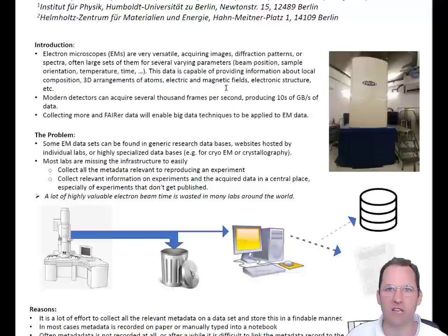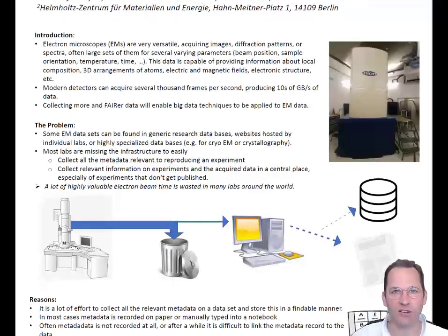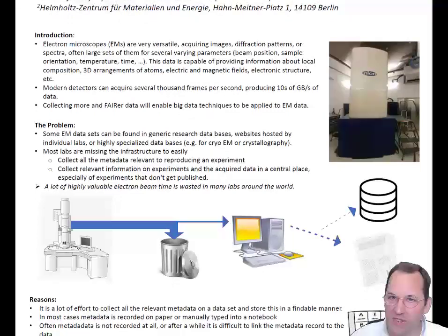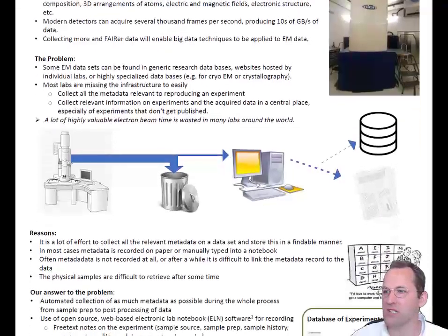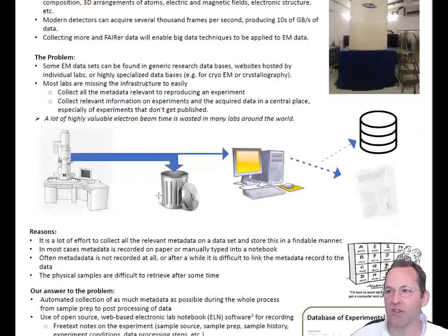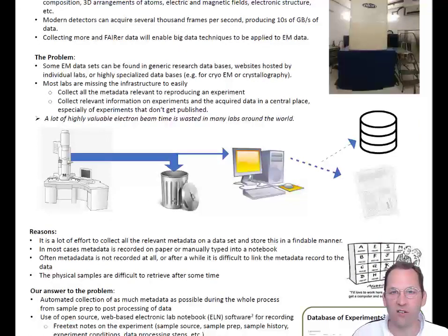Some of our detectors can acquire several gigabytes per second of data, almost comparable to what CERN produces. Much of this data is, as you will see here in this diagram, recorded for the trash bin, because only a very small subset actually makes it into publication. Nobody does the work of preparing all the rest of the data to be stored for later use by other people, because this concept of sharing and using data by others is not so well established.